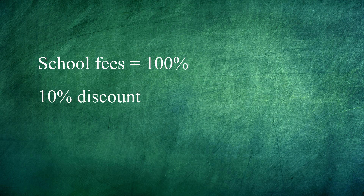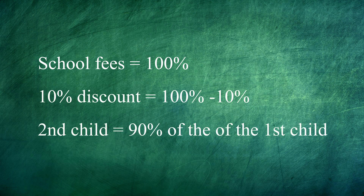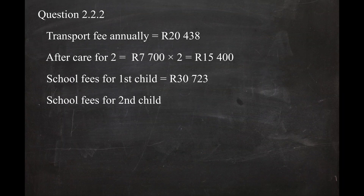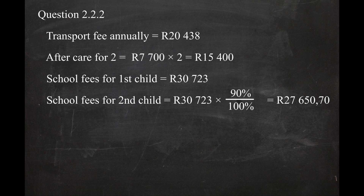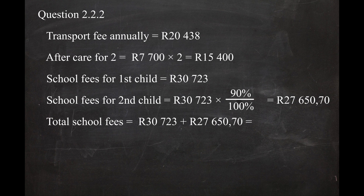If the school fees are considered to be 100%, a 10% discount reduces them to 90%. So: 30,723 Rand multiplied by 90% divided by 100% equals 27,650 Rand 70 cents for the second child. The total school fees for both children will be 30,723 Rand plus 27,650 Rand 70 cents, equalling 58,373 Rand 70 cents.